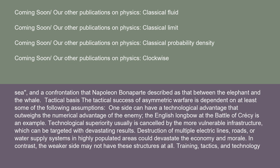The tactical success of asymmetric warfare is dependent on at least some of the following assumptions. One side can have a technological advantage that outweighs the numerical advantage of the enemy — the English longbow at the Battle of Crécy is an example. Technological superiority is usually canceled by more vulnerable infrastructure, which can be targeted with devastating results. Destruction of electric lines, roads, or water supply systems in highly populated areas could devastate the economy and morale, while the weaker side may not have these structures at all.